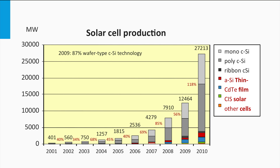Secondly, this graph shows how the various PV technologies contribute to the global module production. The grey colors represent the wafer-type crystalline silicon PV technology. As you can see, the crystalline silicon PV technology is the dominant technology and contributes to around 90% of the total module production.